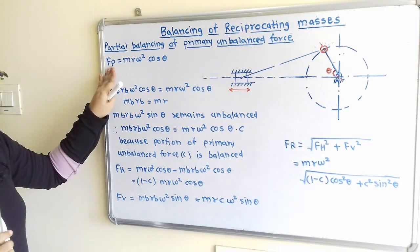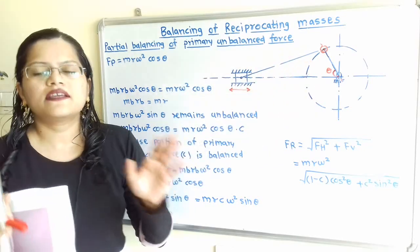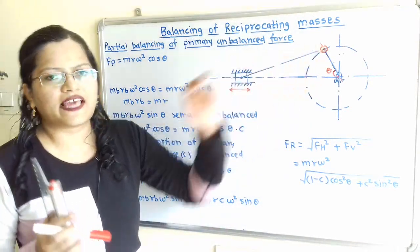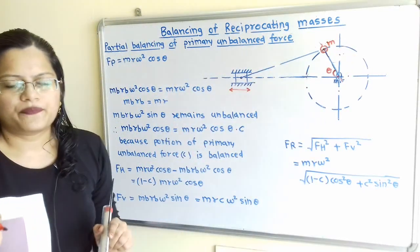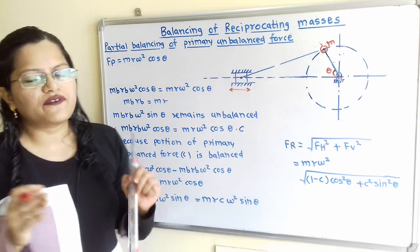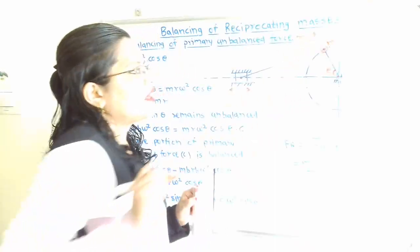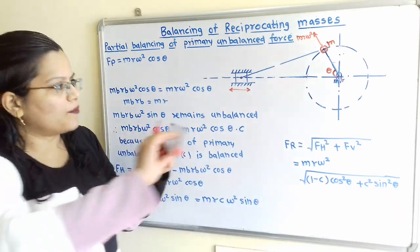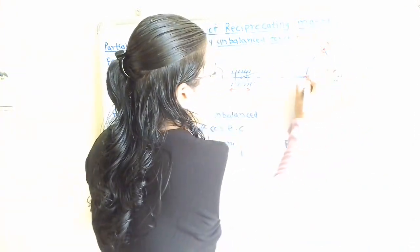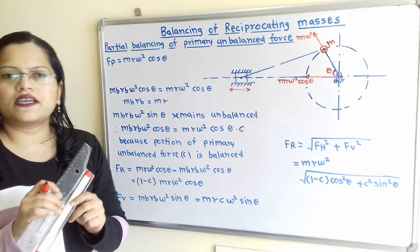The primary unbalanced force is Fp = M·R·ω²·cos θ. If we consider the mass M placed at the crank pin C, rotating through angle θ with angular velocity ω, there is a centrifugal force M·R·ω² acting radially outward. Its horizontal component is M·R·ω²·cos θ, which is nothing but the primary unbalanced force.